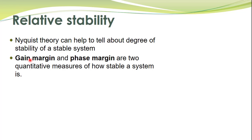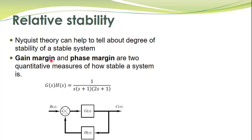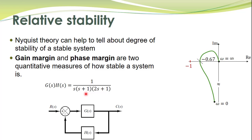To study the relative stability of systems, there are two quantitative measures: gain margin and phase margin. To understand these two terms, consider a closed loop system with loop gain given by a transfer function. The polar plot of this system shows that since the critical point is not encircled, the closed loop system is stable.